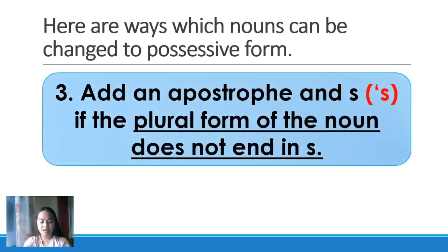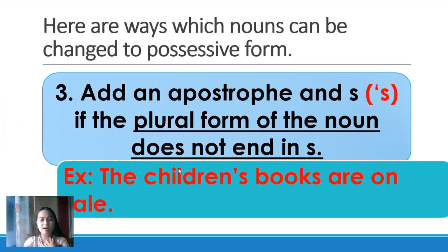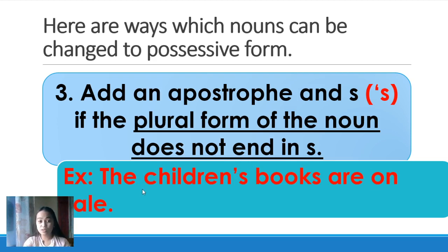Number three: add an apostrophe and S if the plural form of the noun does not end in S. It is plural, but it does not end in S, so add apostrophe S. Example: 'The children's books are on sale.' Children is plural, but it does not end with S, so we add apostrophe S.